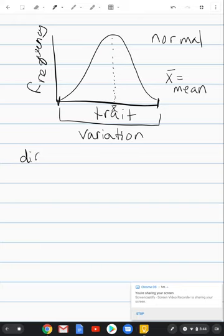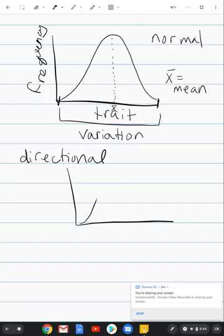This is our original distribution. In the peccary example, all of the small spine-numbered individuals were selected against, and so over time what happened is this distribution shifted.